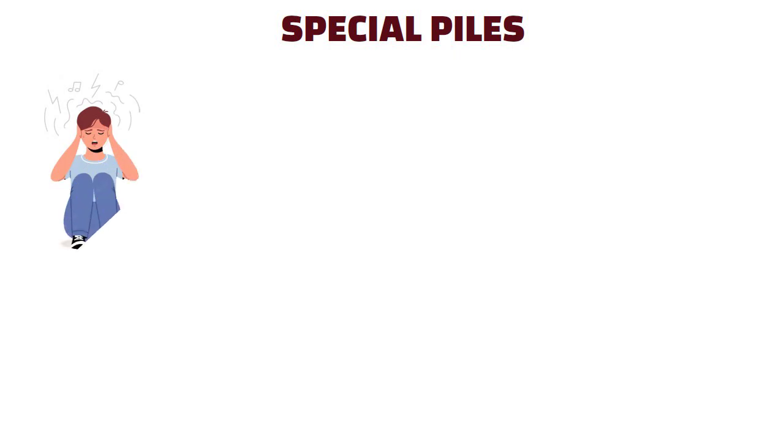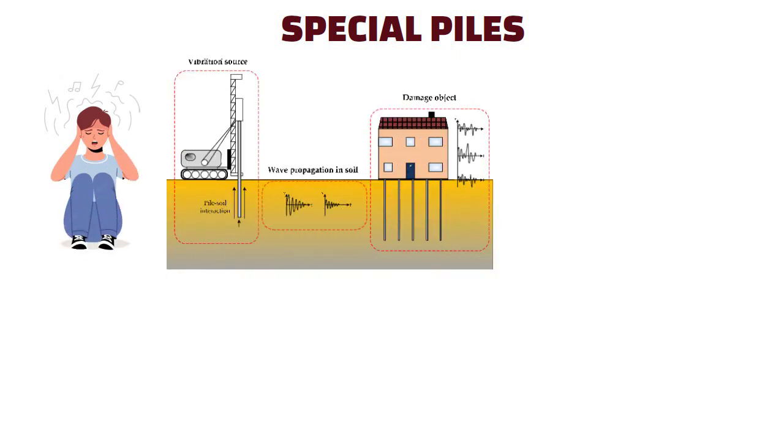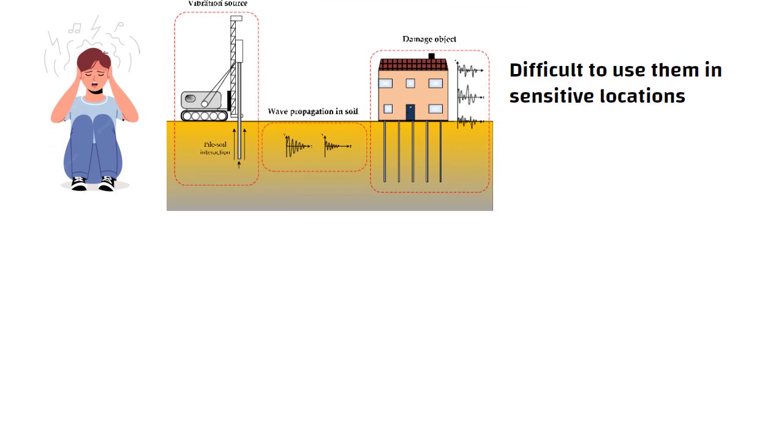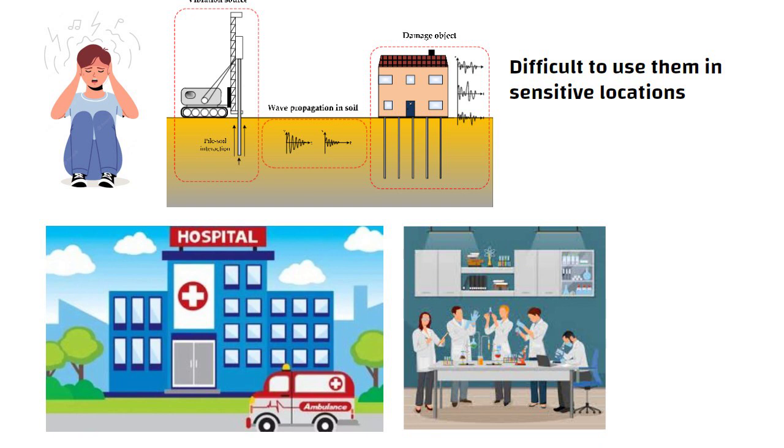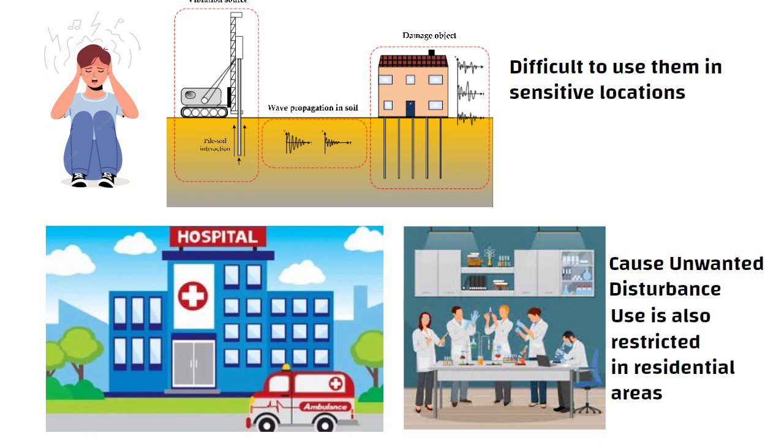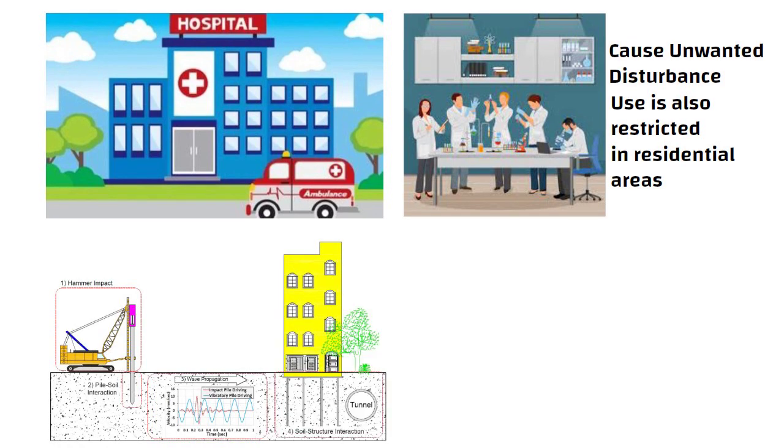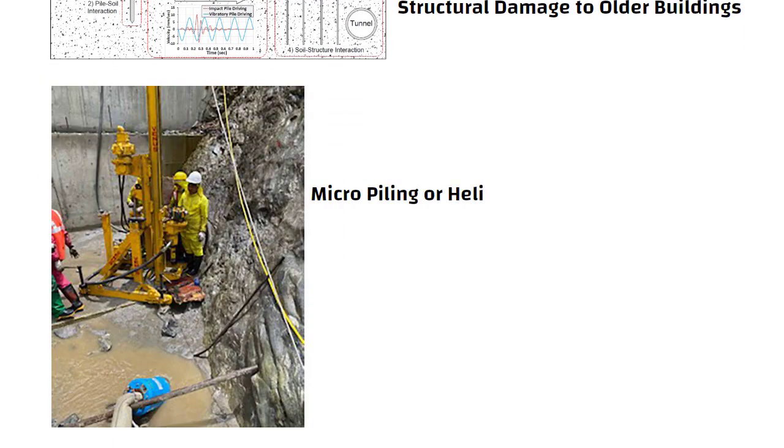Now let us understand special piles. Pile driving is very noisy and causes massive vibrations through the soil. For this reason, it is sometimes difficult to use them in sensitive locations. For example, if an operational hospital or science lab is to be extended, driving piles could cause unwanted disturbance. Their use is also restricted in residential areas in many countries. The vibrations could also cause structural damage to older buildings that are close by. In such situations, it is possible to use micropiling or helical piling, neither of which rely on hammering.